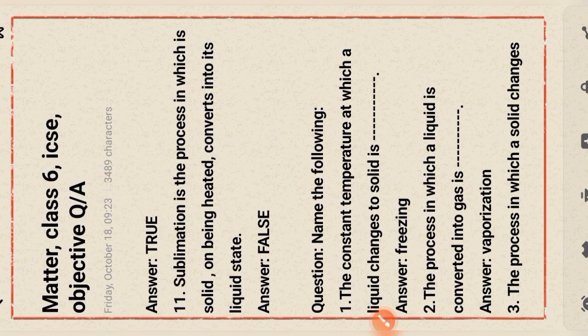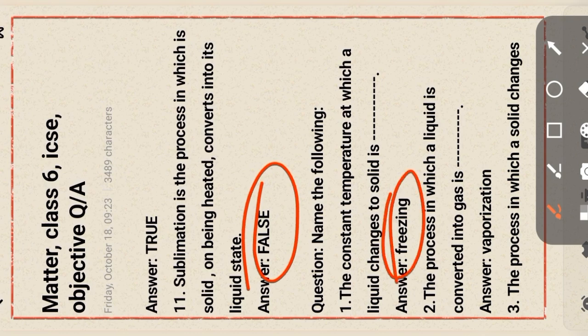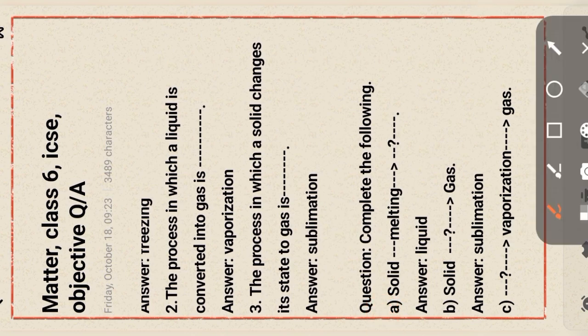Sublimation is the process in which a solid on being heated is converted into its liquid state — false. Name the following: the constant temperature at which a liquid changes to solid is called freezing point. The process in which a liquid is converted into gas is vaporization. The process in which a solid changes its state to gas is sublimation.